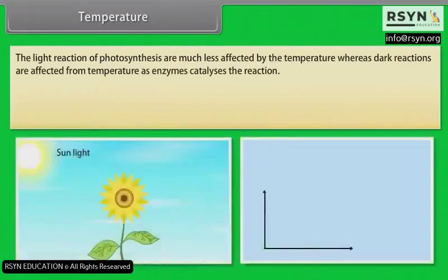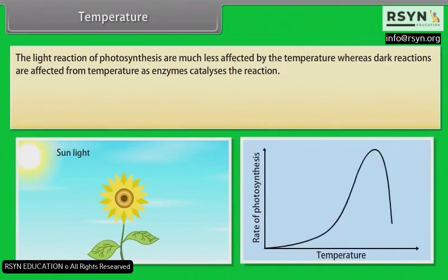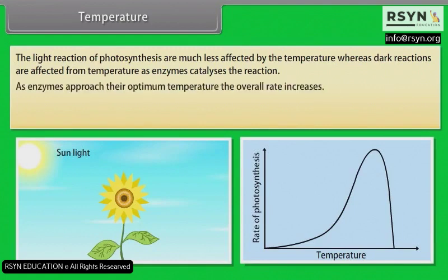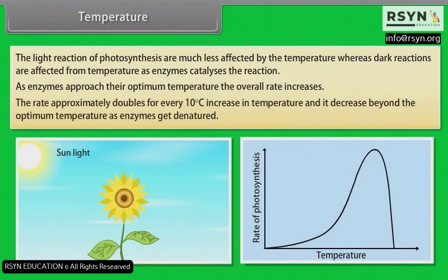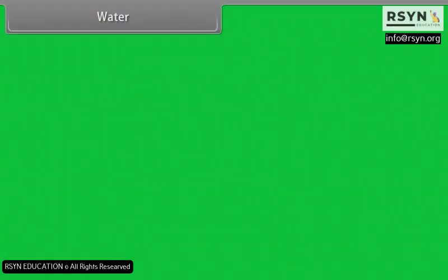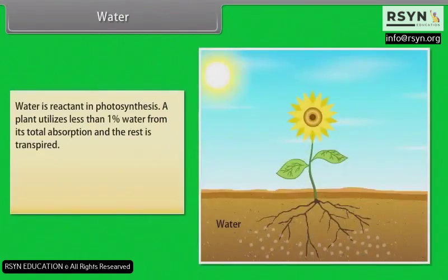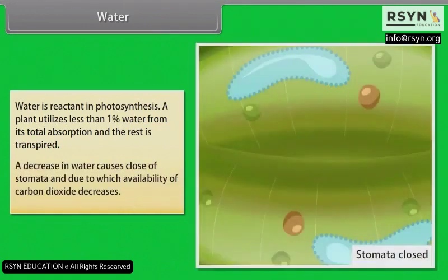The light reactions of photosynthesis are much less affected by temperature, whereas dark reactions are temperature-sensitive because enzymes catalyze those reactions. As enzymes approach their optimum temperature, the overall rate increases — approximately doubling for every 10°C rise — and decreases beyond the optimum temperature as enzymes become denatured. Water is a reactant in photosynthesis; a plant utilizes less than 1% of its total water absorption for photosynthesis, with the rest transpired. A decrease in water causes stomata to close, reducing the availability of CO2.